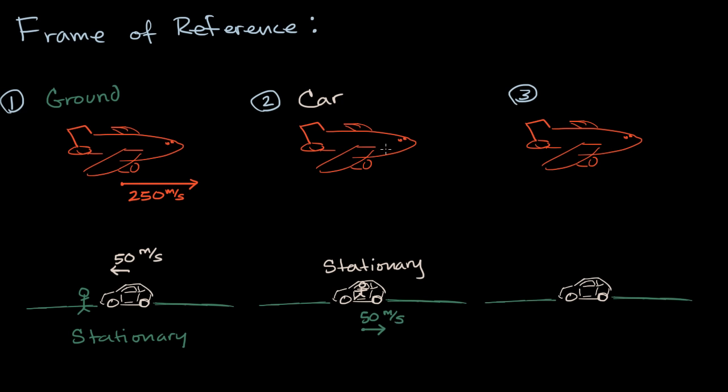Now what would the plane look like? Well, the plane, not only would it look like it's moving to the right at 250 meters per second, but relative to you, it'd look like it's going even faster, because you're moving past it, you are going to the left from the ground's point of view at 50 meters per second. So the plane to you is gonna look like it's going 250 plus 50 meters per second. So the vector would look like this. And so it would look like it's going to the right at 300 meters per second.